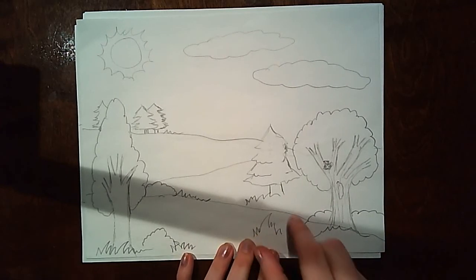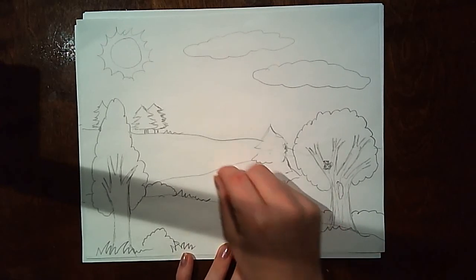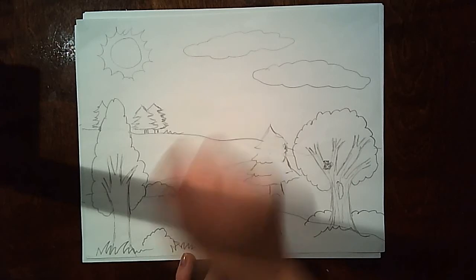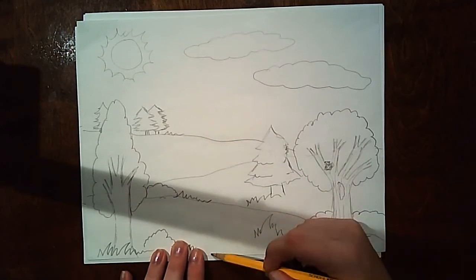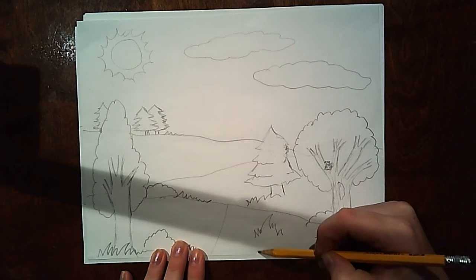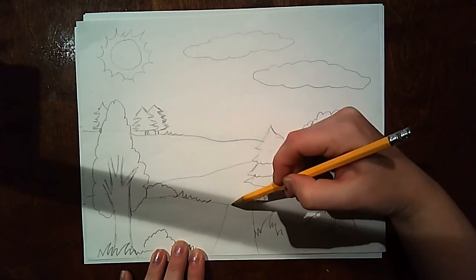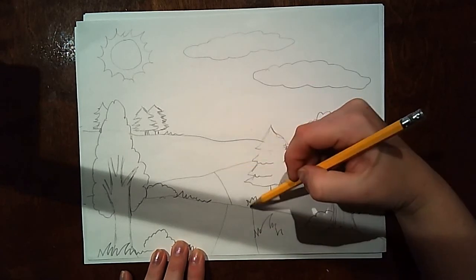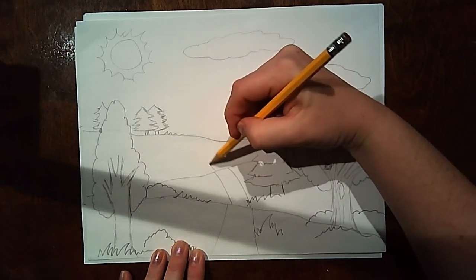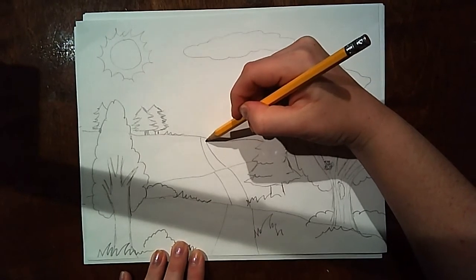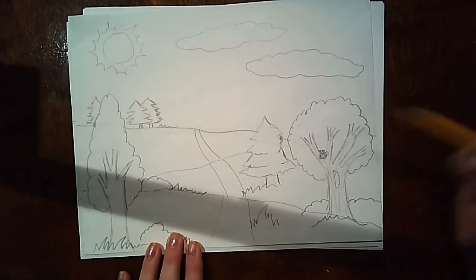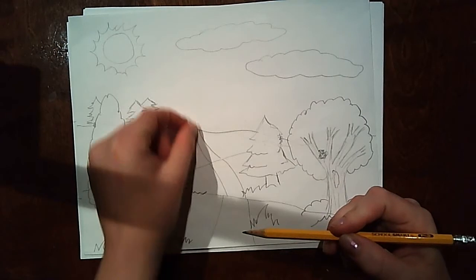Remember, things get big to small as they go away from us. So if I draw a road, I would be drawing a road or a pathway that goes big to small. Big to small.